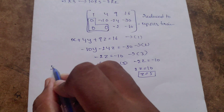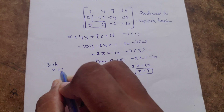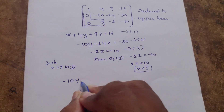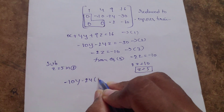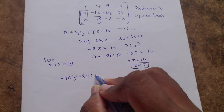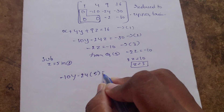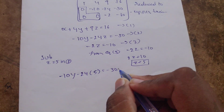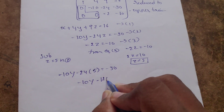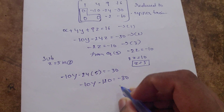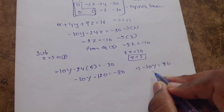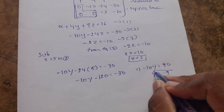Now substitute z equals 5 into equation 2. Minus 10y minus 24 times 5 equals minus 30. So minus 10y minus 120 equals minus 30. Therefore minus 10y equals minus 30 plus 120, which equals 90.